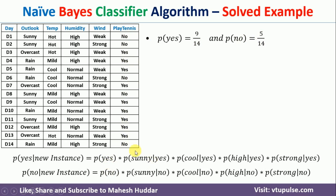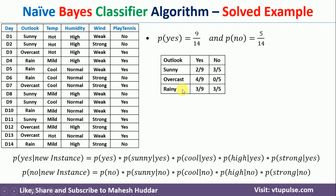Next, we need the conditional probabilities such as probability of outlook equals sunny given yes, probability of temperature equals cool given yes, and so on. To get these conditional probabilities, we write a contingency table. For outlook equals sunny, counting gives 5 total examples: 2 are yes and 3 are no. So probability of outlook equals sunny given yes is 2/9, and probability of outlook equals sunny given no is 3/5. For outlook equals overcast, there are 4 examples and all 4 are yes, so probability of outlook equals overcast given yes is 4/9 and given no is 0/5. The same process is repeated for temperature, humidity, and wind.